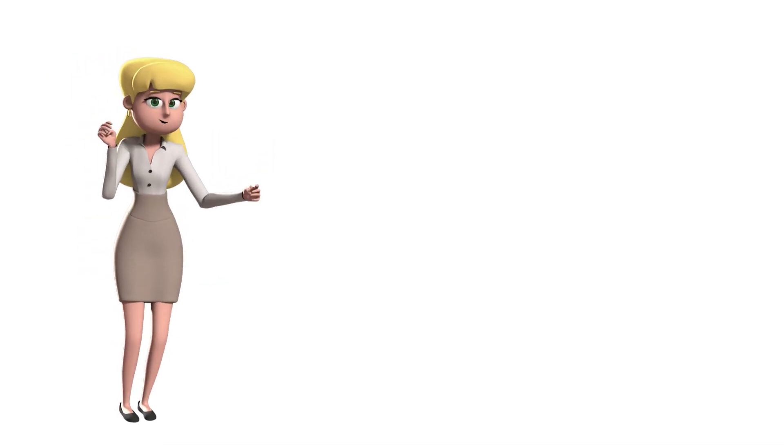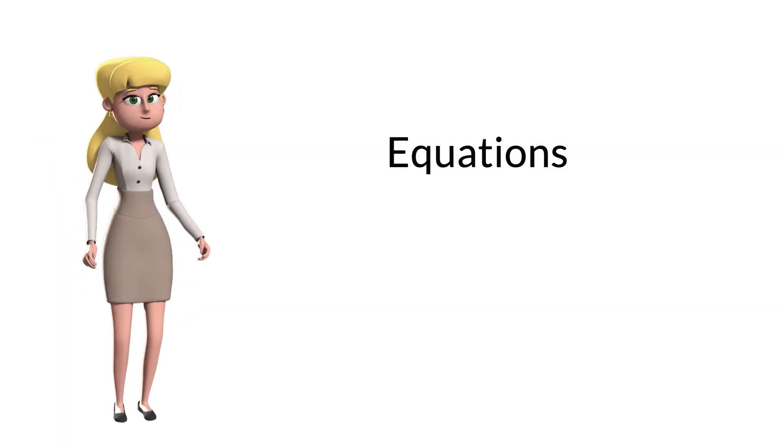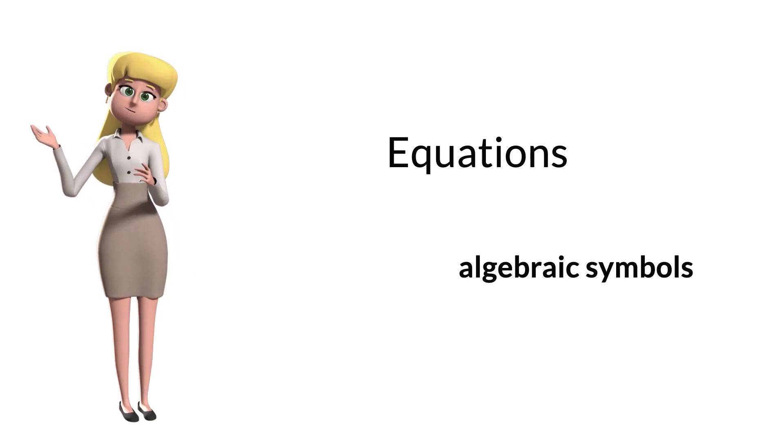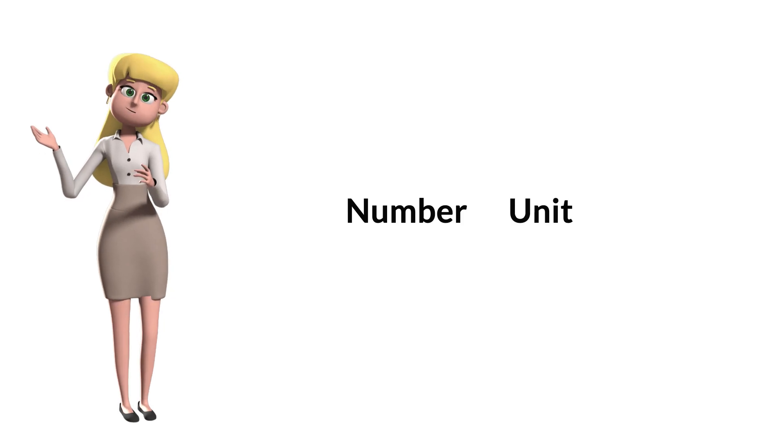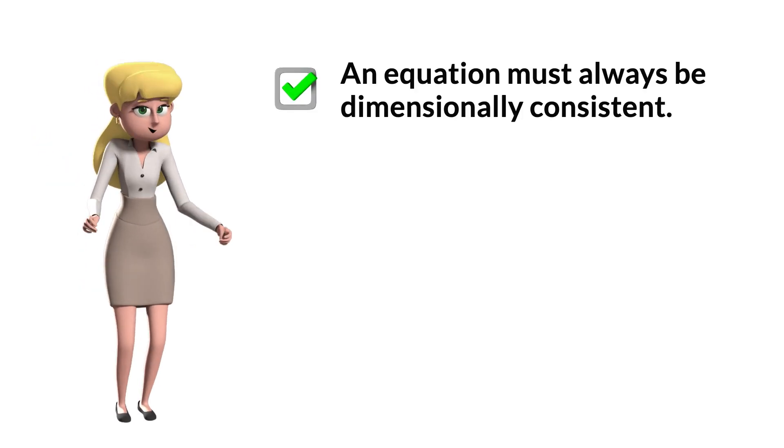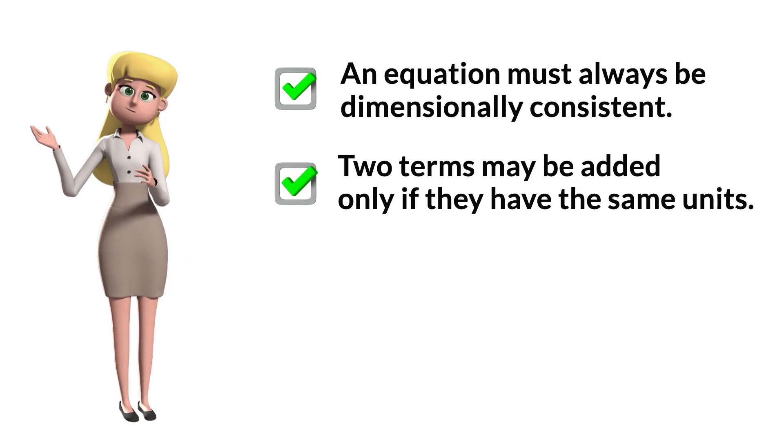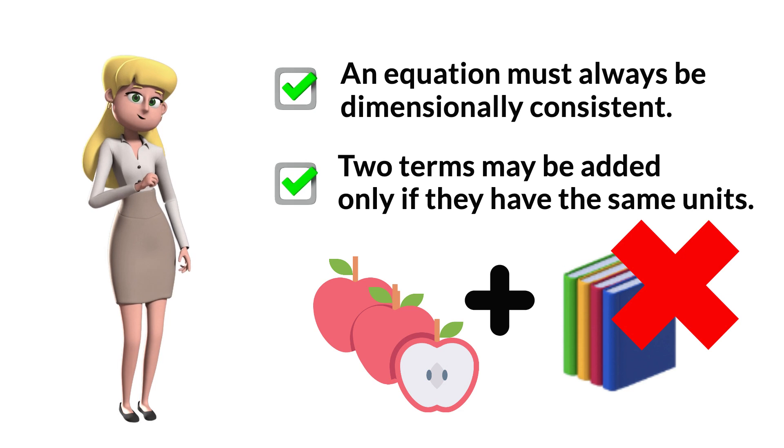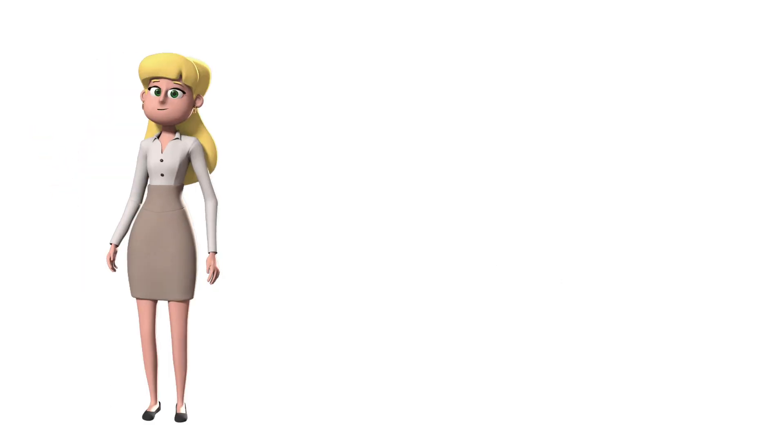Now we proceed to unit consistency and conversions. We use equations to express relationships among physical quantities, represented by algebraic symbols. Each algebraic symbol always denotes both a number and a unit. One: An equation must always be dimensionally consistent. Two: You cannot add apples and books. That is, two terms may be added only if they have the same units. Easy, right?